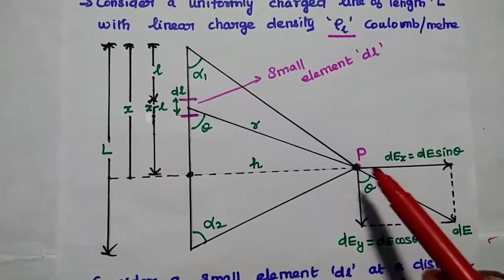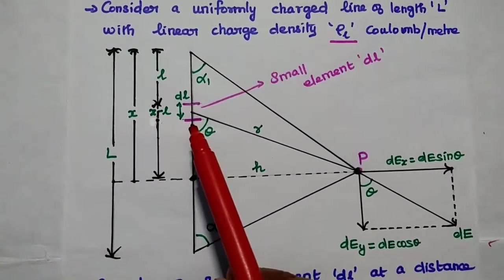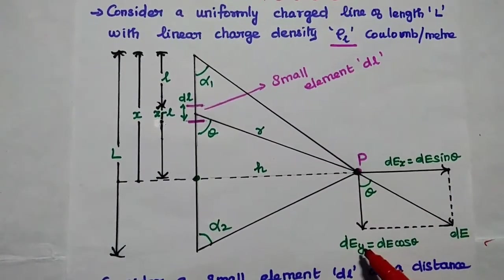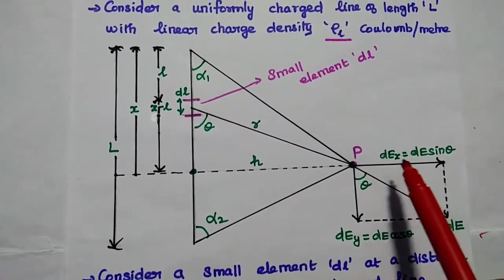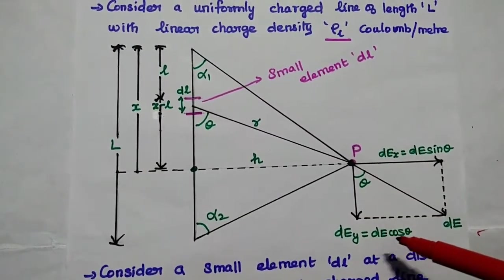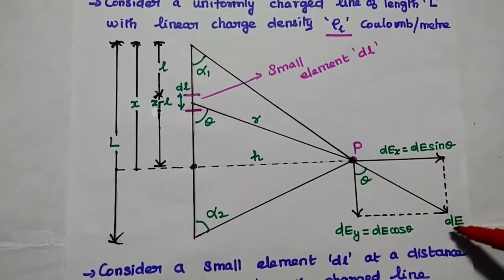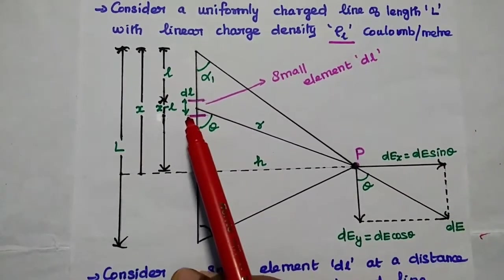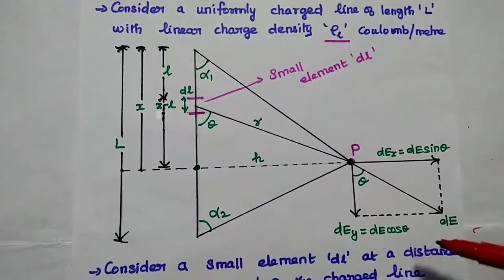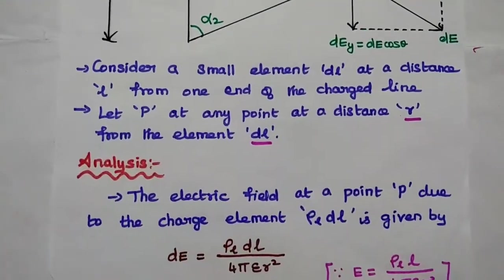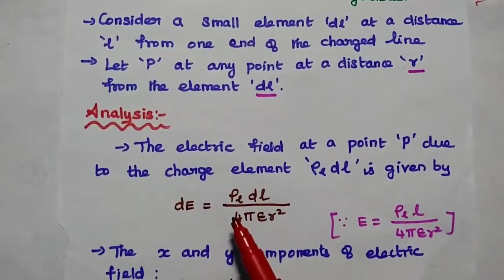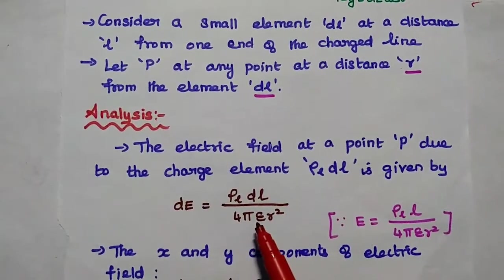The electric field at this point due to charge element ρL·dl is dE. This is the combination of dEx and dEy. The x-direction component gives dEx equal to dE·sinθ, and the y-direction component gives dEy equal to dE·cosθ. The overall electric field dE at point P due to charge element ρL·dl equals dEx plus dEy, given by dE = ρL·dl divided by 4πεr².